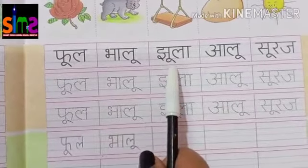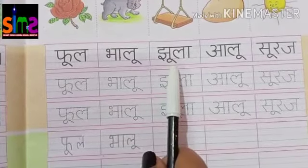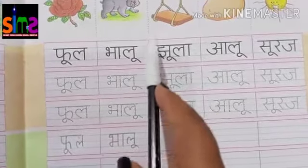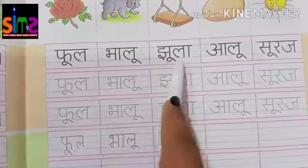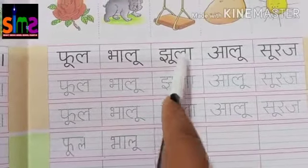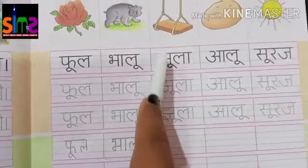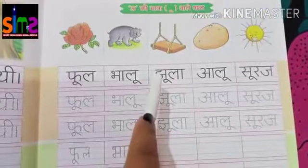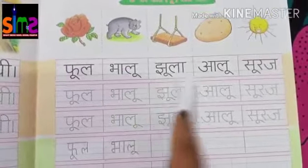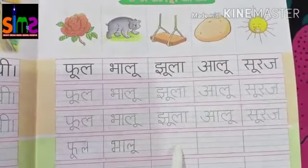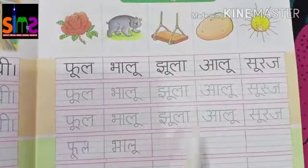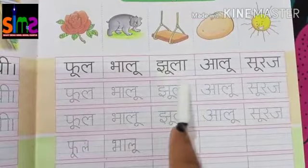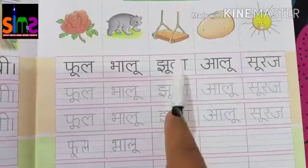जा जा जा — with the long 'aa' vowel sign, झूला (swing). Next word, kids. This is a word sheet and then blanks — it is a word sheet, it is a word.